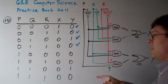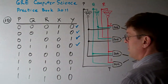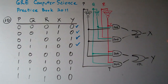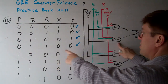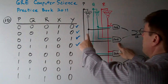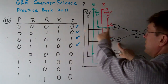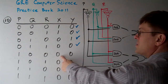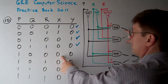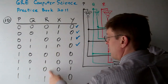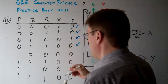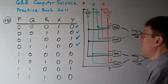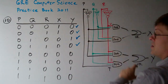We can check through all of them. When P is one, let's do X first. If P is one, then not P is zero. Both not P inputs feed into X, so X has to be zero — which is true. Whenever P is one, not P is zero, and X is going to be zero. So X has to be zero for all cases where P equals one. We've just checked them all.